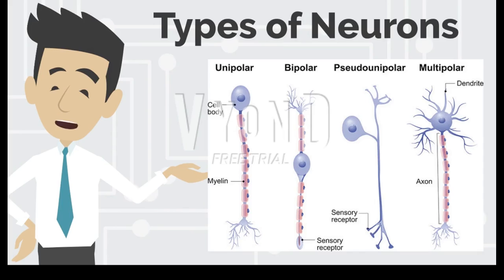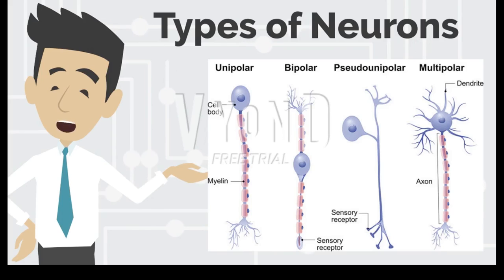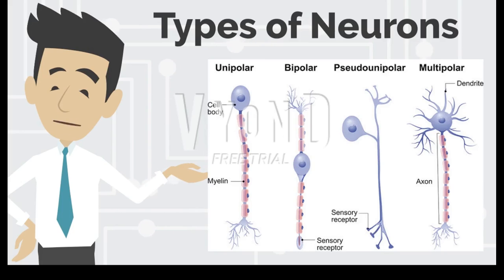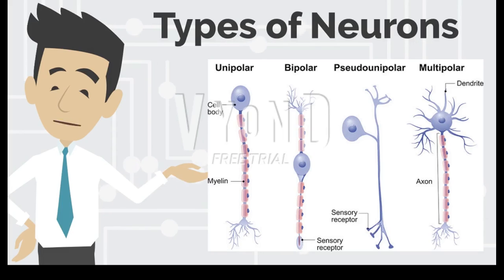The next type we're going to discuss is motor neurons. Motor neurons of the spinal cord are part of the central nervous system, or CNS, and connect the muscles to glands and organs throughout the body. These neurons transmit impulses from the spinal cord to skeletal and smooth muscles, such as those in your stomach, directly controlling all of the muscle movements.